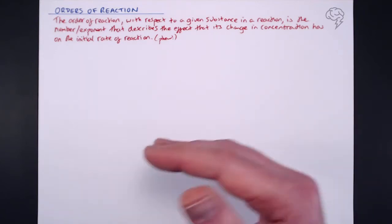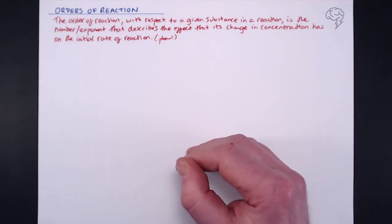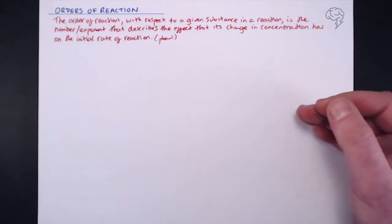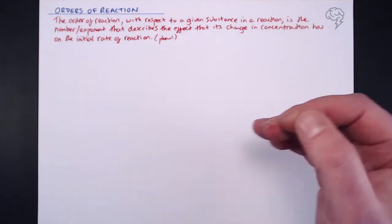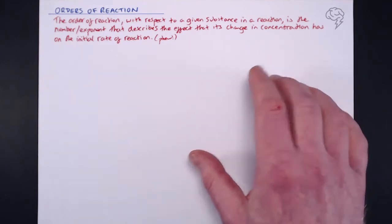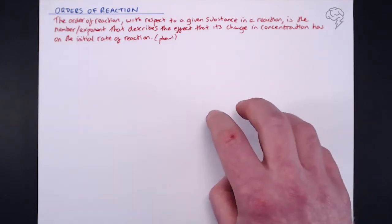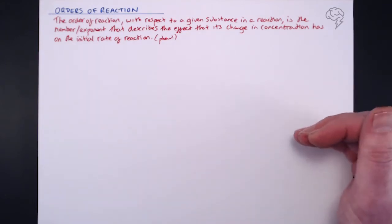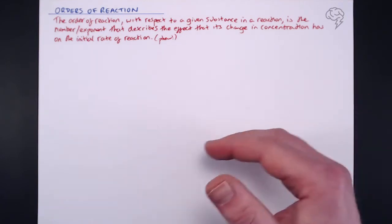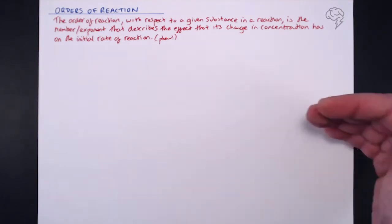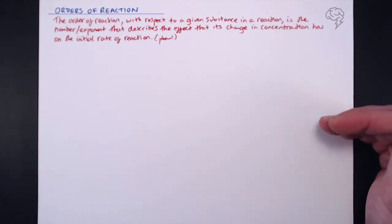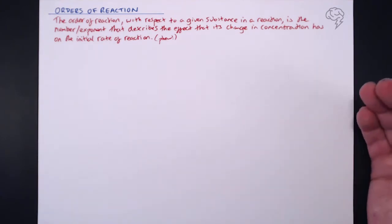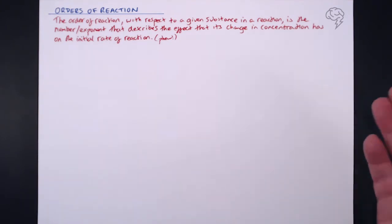So if I double the concentration of a reactant, does the rate double or does it go up by four times? If I triple the concentration of a reactant, does the rate of reaction change at all? So exactly what happens — by how much does the rate increase if we increase the concentration of a reactant?